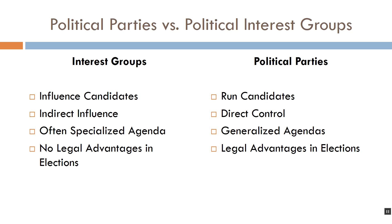Parties have generalized agendas because they need to win elections, and to win elections it's not enough to just get the pro-life or pro-choice people to vote for you — you have to get a whole host of different people to cast their votes for you. That means taking positions on issues that all these different groups care about. Voters have broad interests and care about many different topics, so political parties must adopt a party platform — a long list of statements identifying where the party officially stands on a whole host of issues.